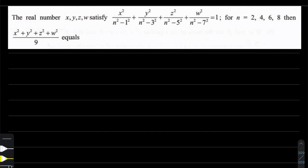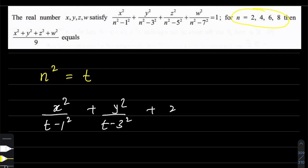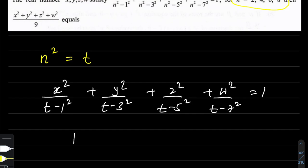We can see that this equation is satisfied for 4 values of n. So if we consider n² as a new variable t and transform the whole equation, we get: x²/(t-1) + y²/(t-9) + z²/(t-25) + w²/(t-49) = 1.